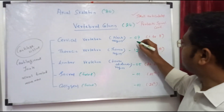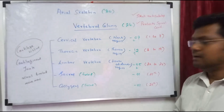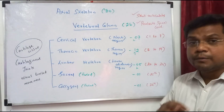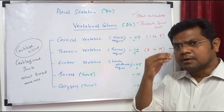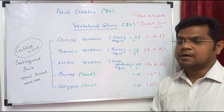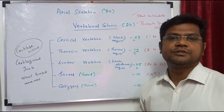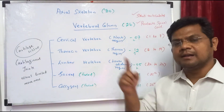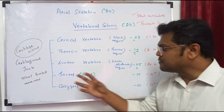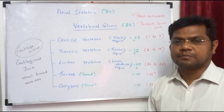In short form: C7, T12, L5, sacral 1 and coccygeal 1 — that is the vertebral column with 26 bones. Between the bones there are joints, and in those joints there is cartilage tissue — these are cartilaginous joints. Fibrous joints are in the skull; cartilaginous joints are in the vertebral column, and they allow limited movement.